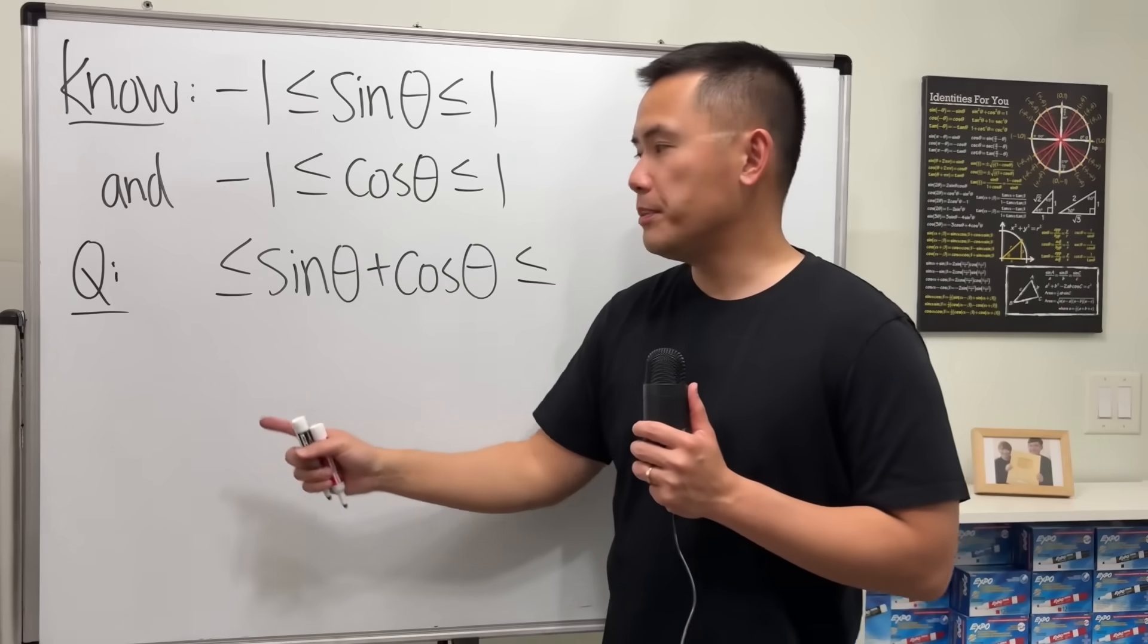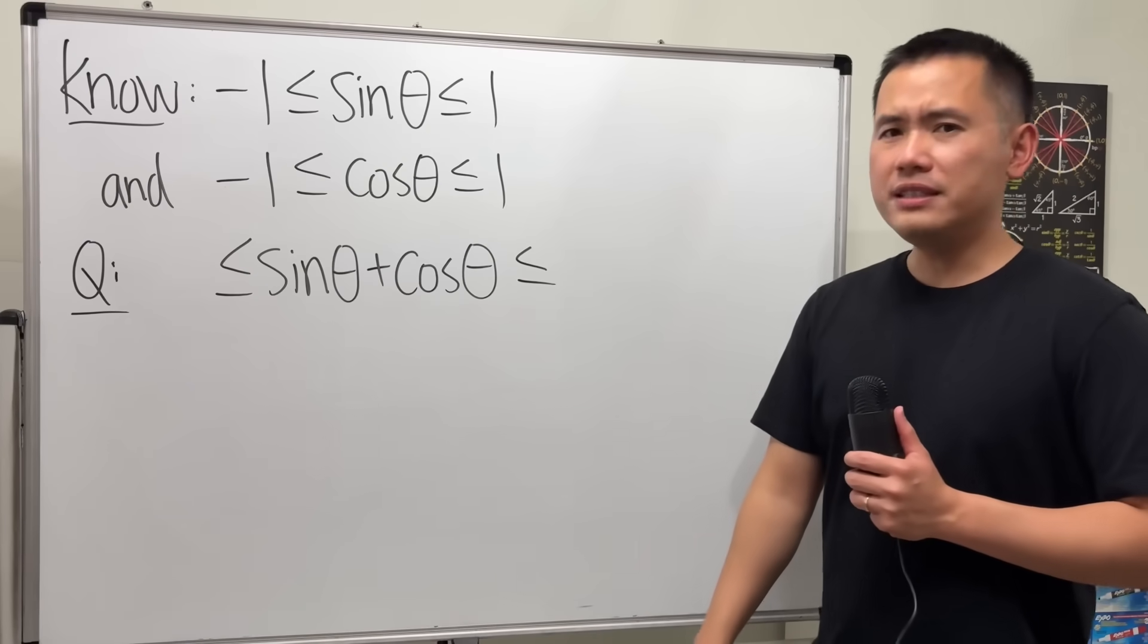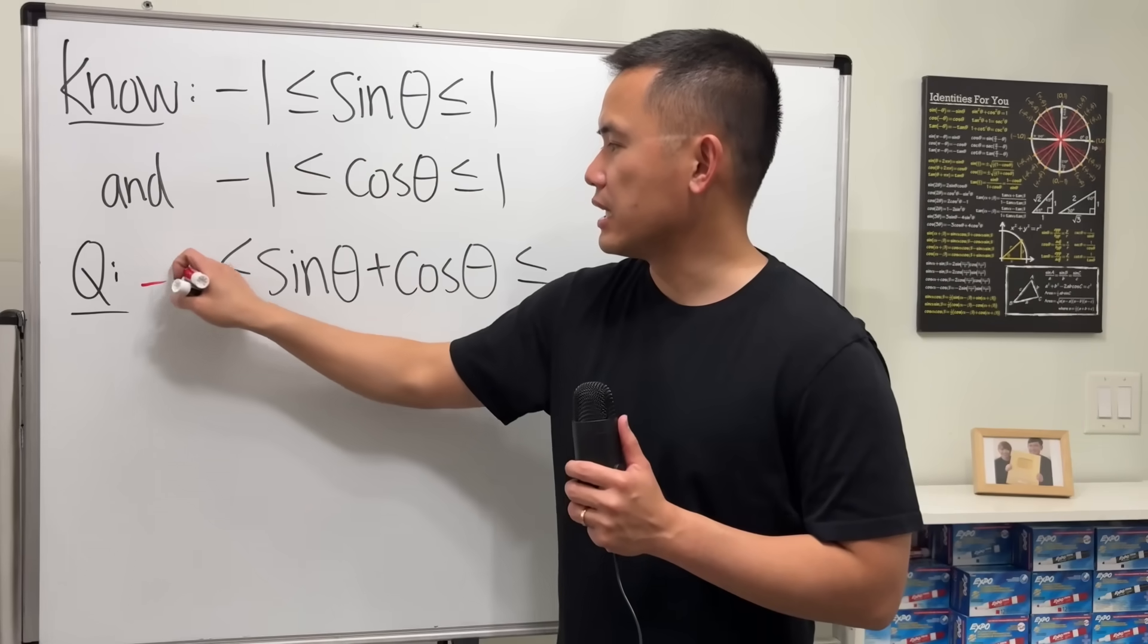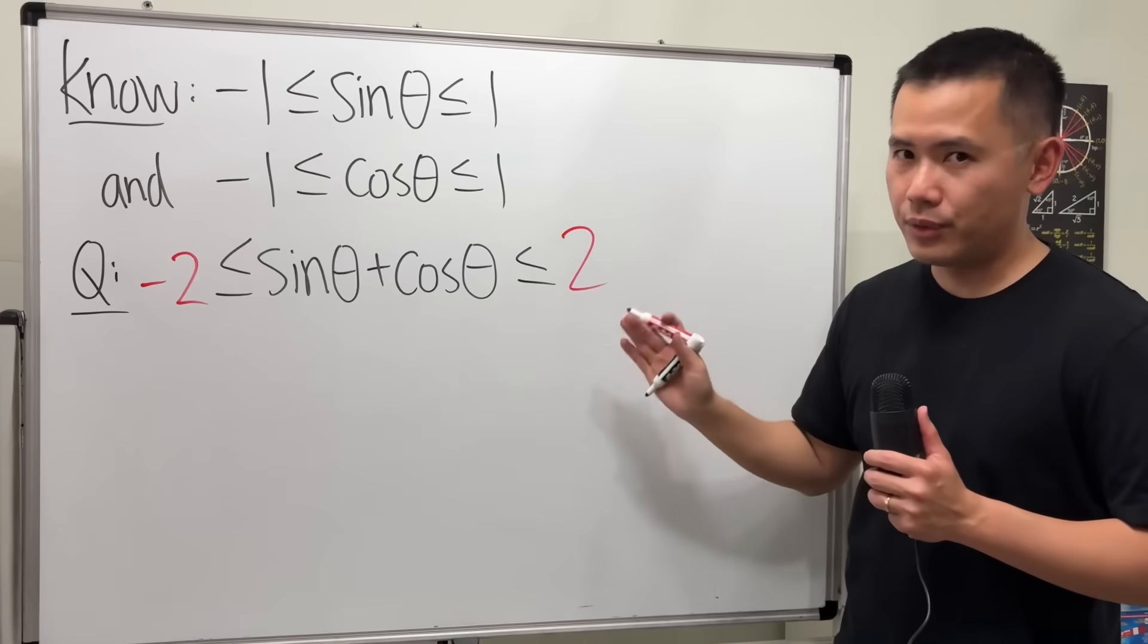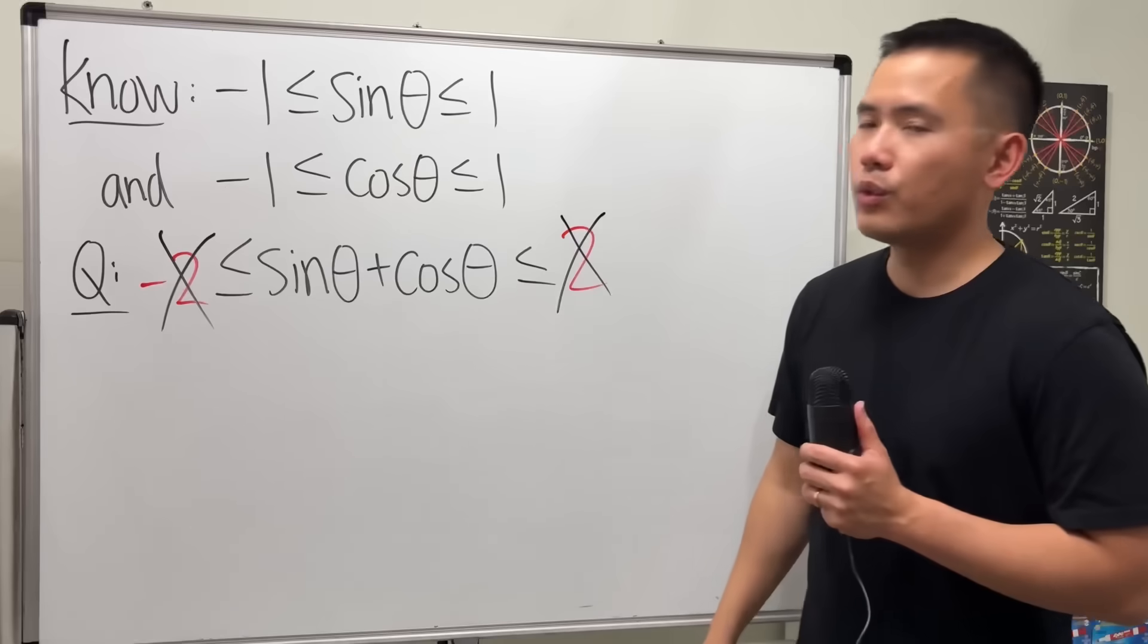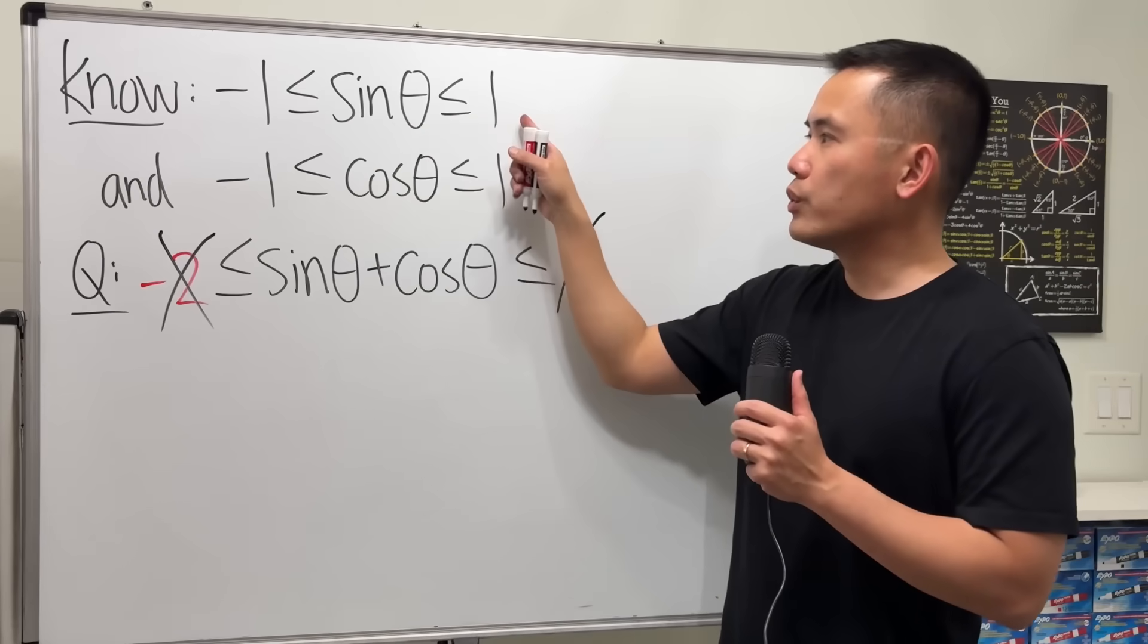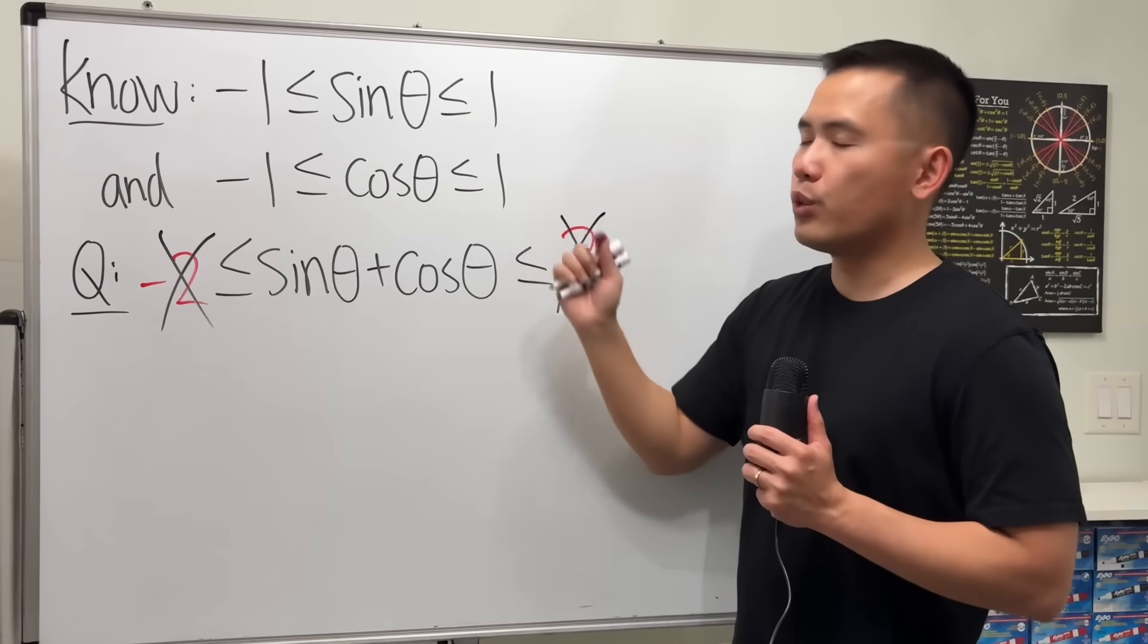It looks really easy, right? Because we add the middle, so we should just add this and that, which is negative 2, and then we add this and that, which is just 2. But if you do this, it's not going to be correct. Why? Because when sine theta is equal to 1, that theta value is not going to make cosine equal to 1.